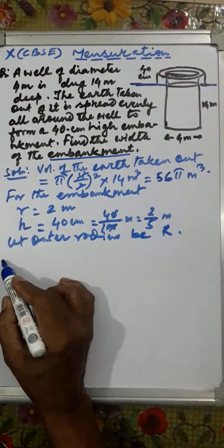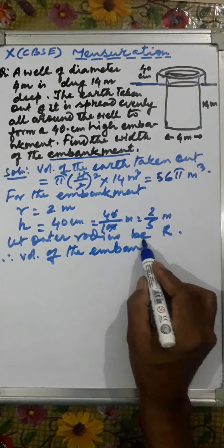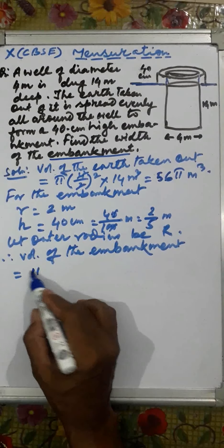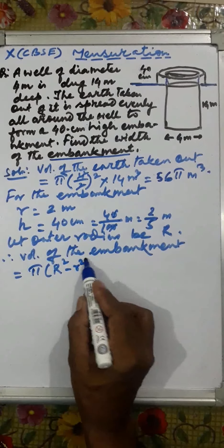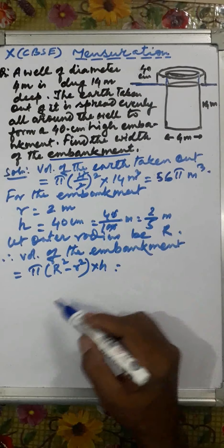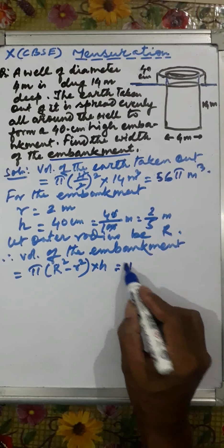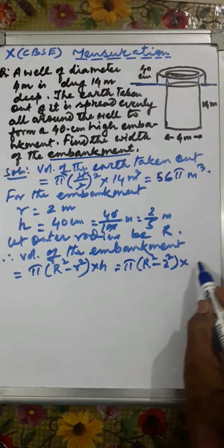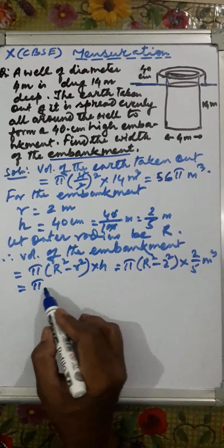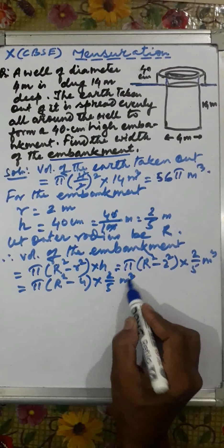Let the outer radius be capital R. Therefore, the volume of the embankment equals the area of the ring times height: π(R² − r²) × h. This gives π(R² − 2²) × (2/5) meter cube, which can be written as π(R² − 4) × (2/5) meter cube.